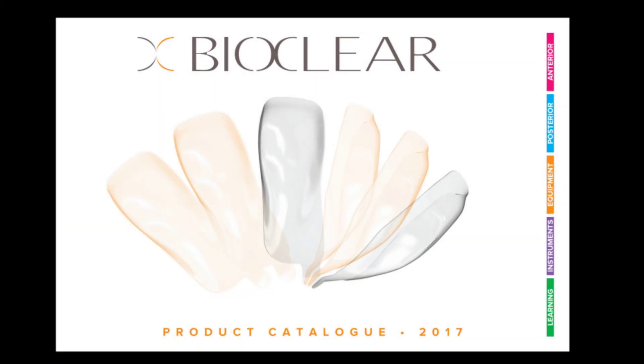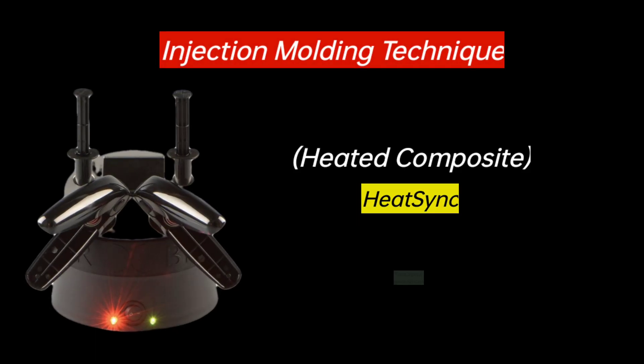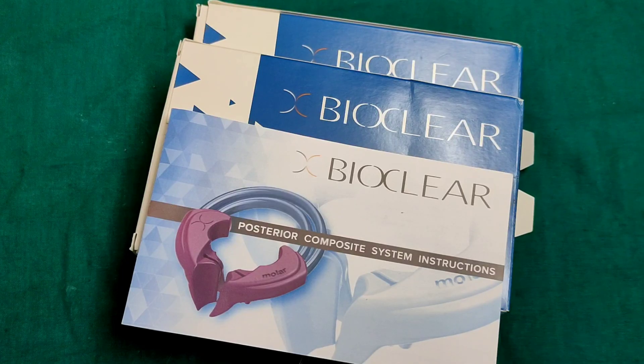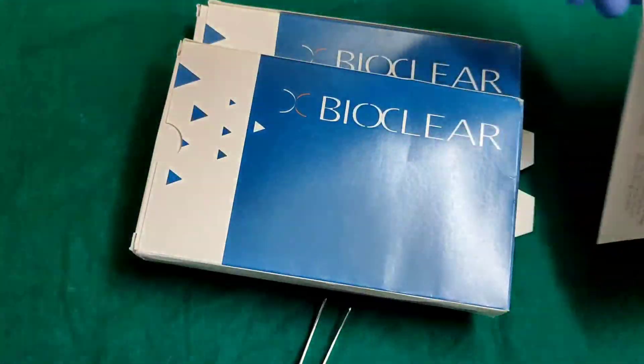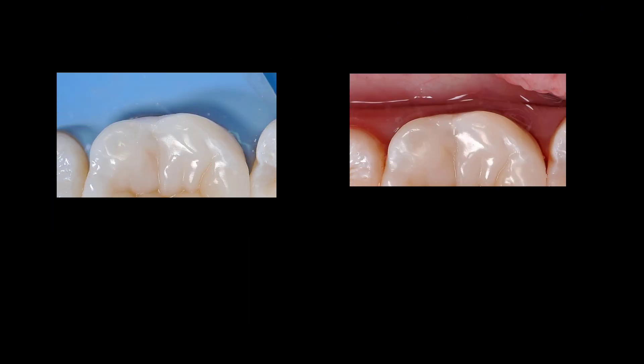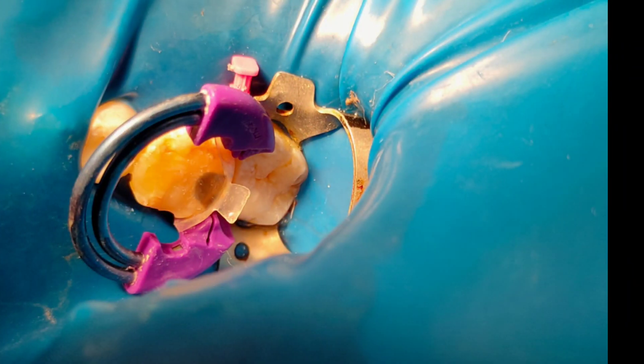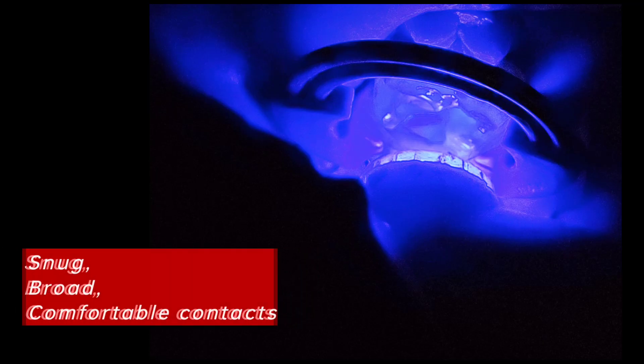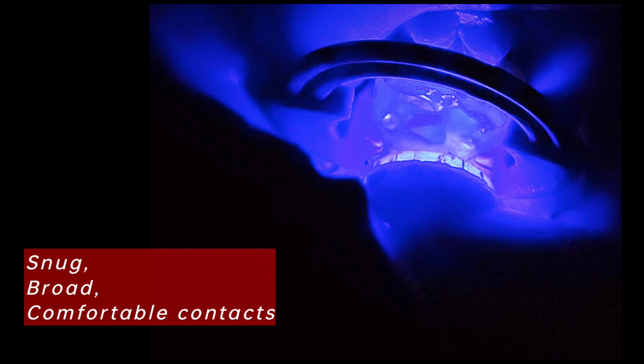This system was developed specially for use with the injection molding technique using heated composite. BioClear Posterior System offers a comprehensive array of matrices, wedges, and rings that allow for treatment of most posterior clinical situations. The manufacturer claims that BioClear's posterior products help to create snug, broad compatible contacts every time.